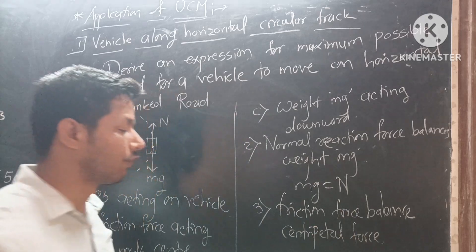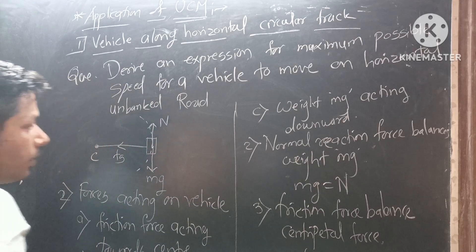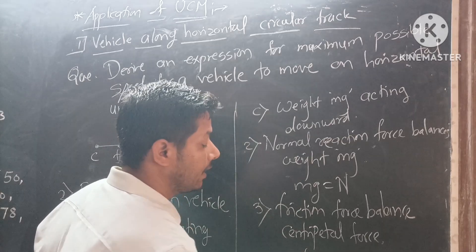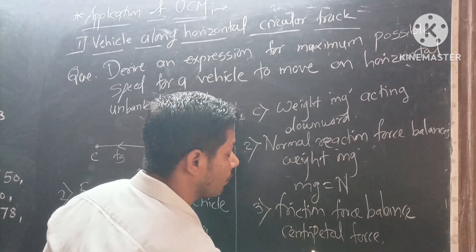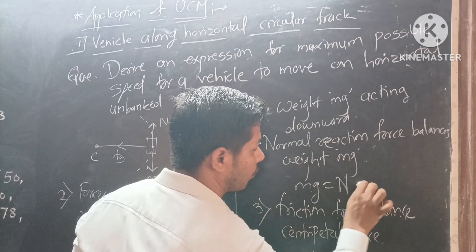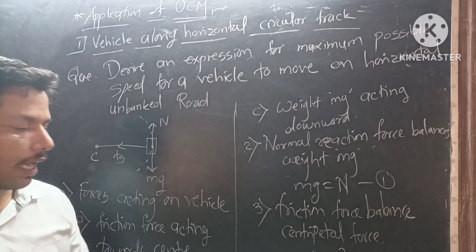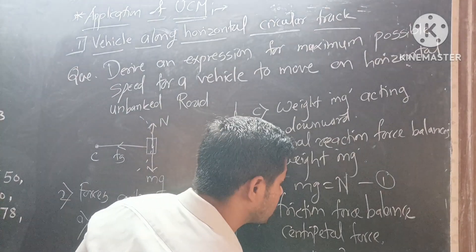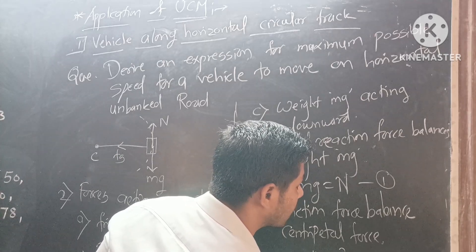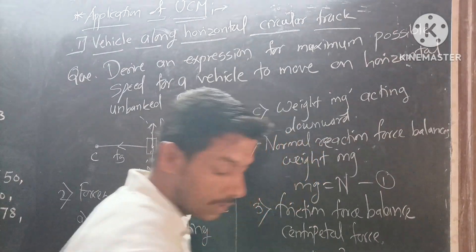Centripetal force mv² upon R is equal to frictional force. This is equation number one. Now, frictional force maximum is μs into N. Frictional force maximum is μs into N.